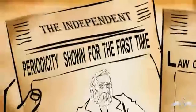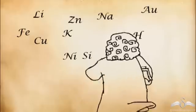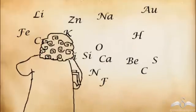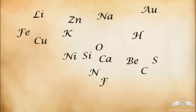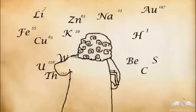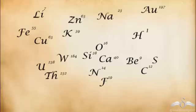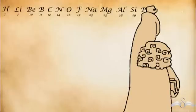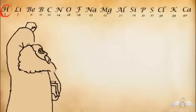Mendeleev was aware of the concept of periodicity and atomic mass. He wanted to study these properties further. He started writing the symbols on the walls of his room. Then he wrote the atomic mass of each element next to their symbols. Further, he arranged the elements in increasing order of atomic mass and wrote them in a single row. He then marked the elements showing the same properties with the same colour.